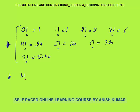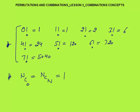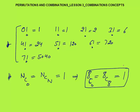Now, NC0 and NCN are always equal to 1. You must know this directly — don't need to open the formula and calculate. For example, 8C0 as well as 8C8, their value will be equal to 1.